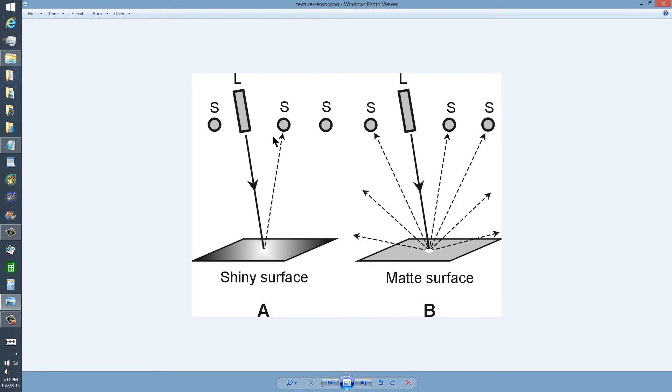A shiny surface like a mirror will reflect exactly according to the optics rule—the angle of incidence equals the angle of reflection. You'll get a laser beam reflected right back at one sensor, but only one. Whereas a matte surface will scatter the laser beam, and you'll get light detected to some extent at all the sensors.